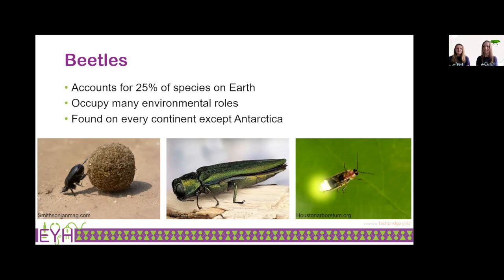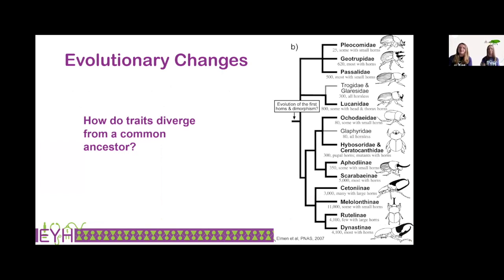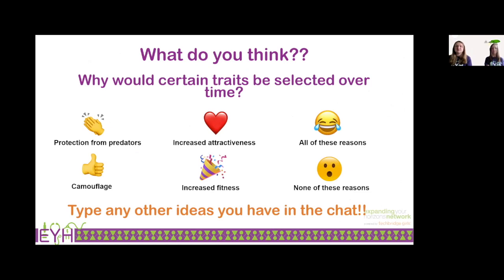Going back to phylogenetics, all of these beetles come from a common ancestor. Here we're showing horned beetles — all of these horned beetles have a common ancestor back in time, and over time they diverge to develop different species. You can see along here the different sized horns of these beetles. So we want to ask: how do you think these traits are selected for? Why would having big horns be valuable for a beetle? Are these traits selected for because of protection from predators, increased attractiveness, or something else? You can use your reactions or type ideas in the chat.